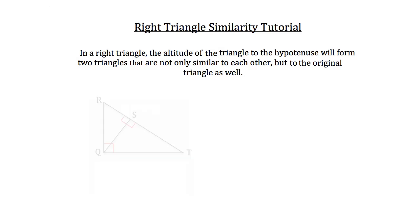Let me show you an example. Here we have triangle QRT, and we've drawn in the altitude QS. By drawing in that altitude, we've divided the large right triangle QRT into two smaller right triangles. Triangle QRS on the left is the smallest of the three, and triangle QST is the medium-sized right triangle of the three.